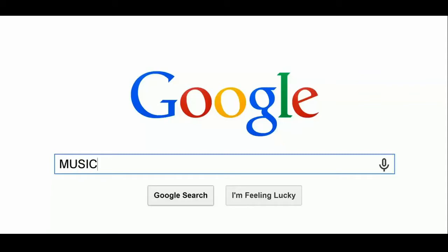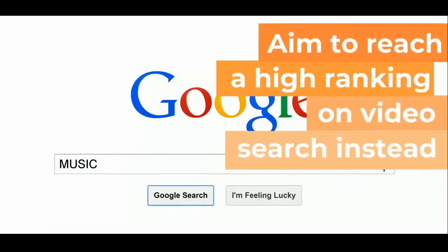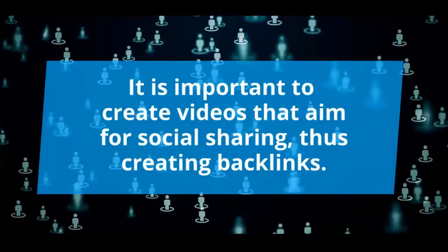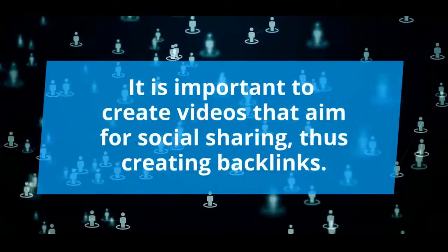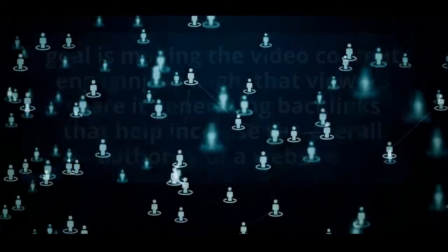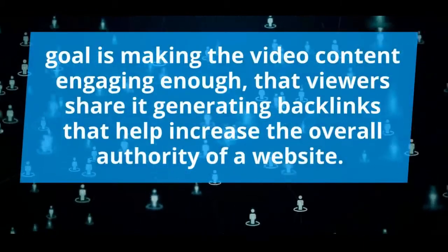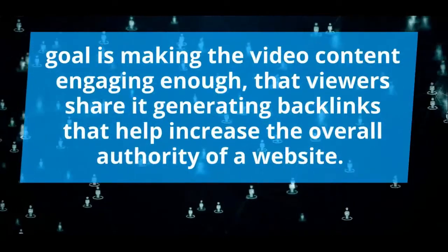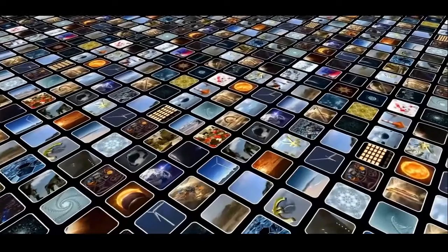To gain a good ranking of your video on universal search results, it has a lot to do with the authority of your website. So instead of focusing on ranking on the universal search, aim to reach a high ranking on the video search instead. It is important to create videos that aim for social sharing, thus creating backlinks. The goal is making the video content engaging enough that viewers share it, generating backlinks that help increase the overall authority of a website.